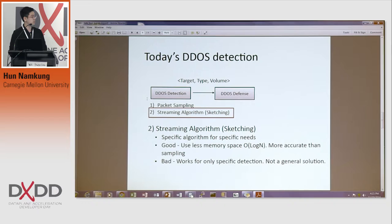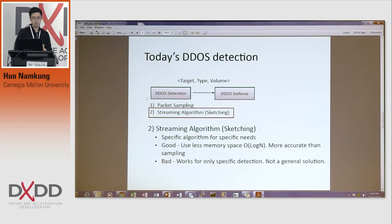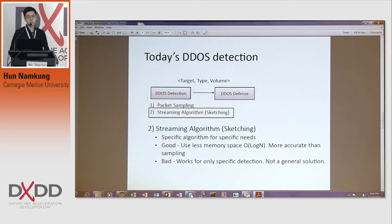The alternative is streaming algorithms and sketching. What they want to do is perform DDoS detection within only a small, limited amount of memory. They want to inspect every packet but within, for example, O(log n) size of memory, where n is the total number of packets. This is more accurate than sampling, but the bad thing is it only works for specific applications and specific needs — you cannot use sketching for generalized DDoS detection.